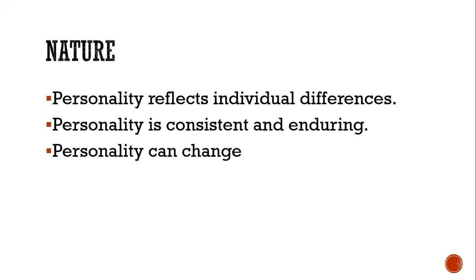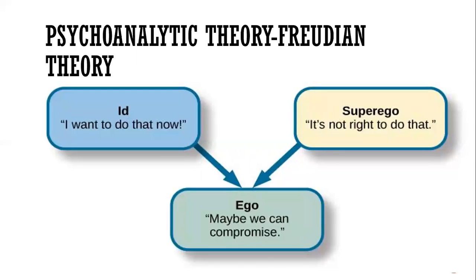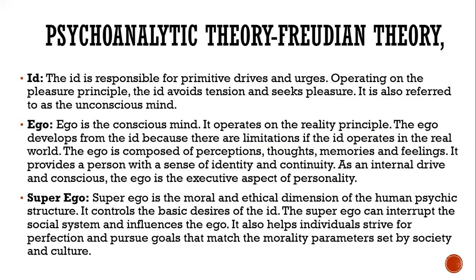Now we will move to the theories that support personality. The psychoanalytic theory, also called Freudian theory, is one such theory. Freud talked about three things in his model: ID, Superego, and Ego. The ID represents 'I want to do what I want now — immediate satisfaction.' The Superego says 'it's not right to do that' based on beliefs and morals. The Ego says 'maybe we can compromise.'